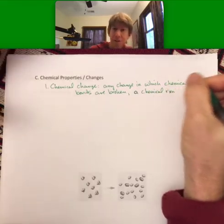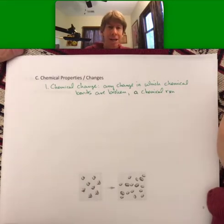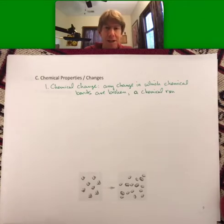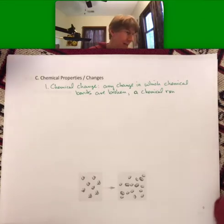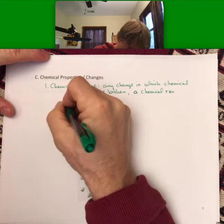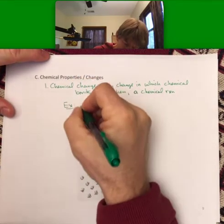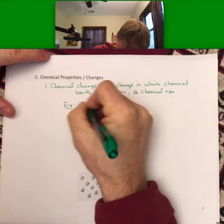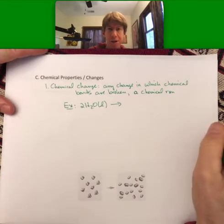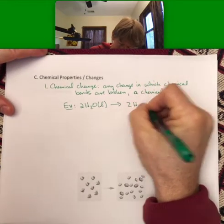That is the definition of a chemical reaction. So a chemical change is a chemical reaction, because that's how we're going to define a chemical reaction: a chemical reaction is any process or change where bonds are broken.